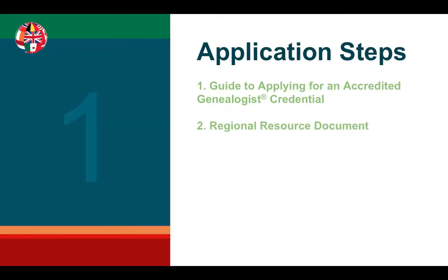Second, you need to download, review, and become familiar with the regional resource document for your region of interest. It can be found under the Becoming Accredited tab on the website. In this document, you will find a list of important records for your region. You should have experience finding these records as well as knowledge about the dates they cover, what information they typically contain, and why they were created.